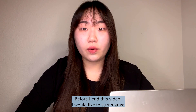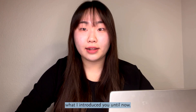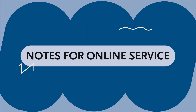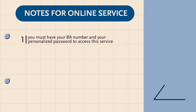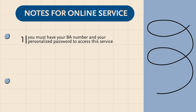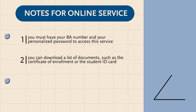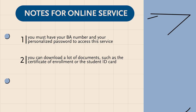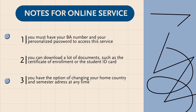Before I end this video, I would like to summarize what I introduced you to. Important points for Online DST: You must have your BA number and your personalized password to access this service. You can download many documents such as the certificate of enrollment and the student ID card. You have the option of changing your home country and semester address at any time.